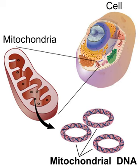Most of these linear mtDNAs possess telomerase-independent telomeres — i.e., the ends of the linear DNA — with different modes of replication, which have made them interesting objects of research because many of these unicellular organisms with linear mtDNA are known pathogens.